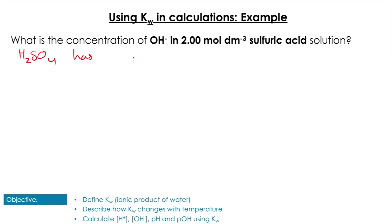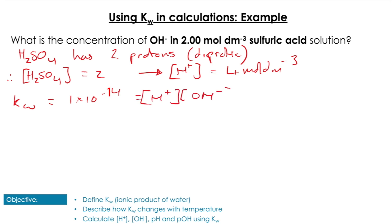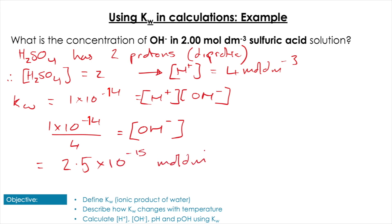Now let's use this relationship in a question: find [OH⁻] in a 2 mol dm⁻³ solution of sulfuric acid. H₂SO₄ is diprotic, so [H⁺] = 4 mol dm⁻³. Using Kw: [H⁺][OH⁻] = 1 × 10⁻¹⁴. Rearranging: [OH⁻] = 1 × 10⁻¹⁴ / 4 = 2.5 × 10⁻¹⁵ mol dm⁻³. All we're doing is using that simple relationship to find unknown concentrations.